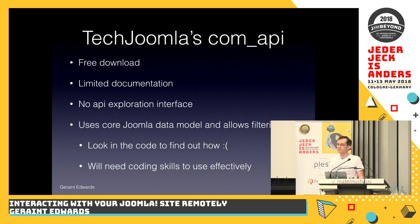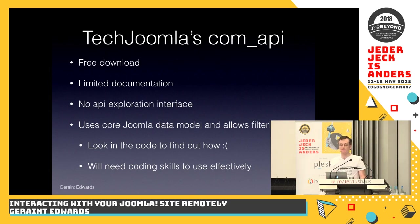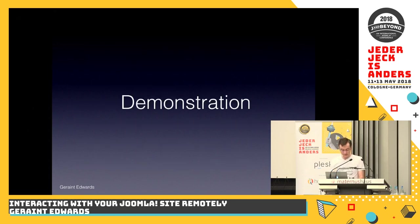TechJoomla's ComAPI is a free download, open source. There is some documentation, but it's limited — only about three or four pages. One of the nice things about most REST interfaces is that you get an exploratory interface to find the methods that it offers, but TechJoomla doesn't currently have that sort of drill-down system. It does use the core Joomla data models and allows filtering, but the documentation doesn't explain how that filtering works — so you need to look into their plugins and code. To use it, you need a bit of coding experience.